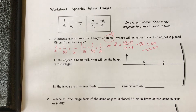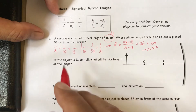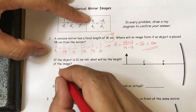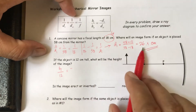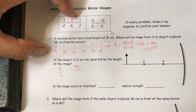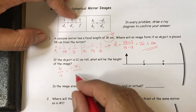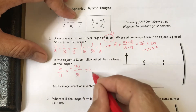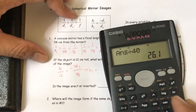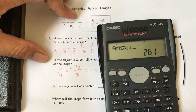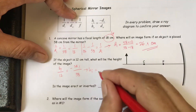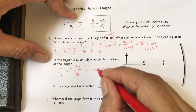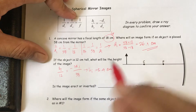We use h-i divided by h-o equals negative d-i divided by d-o. Here h-o is 12 centimeters, d-i is 26.1, and d-o is 18 — so h-i equals 26.1 times 12 divided by 18, giving approximately negative 17.4. Actually h-i is negative 5.4 centimeters.